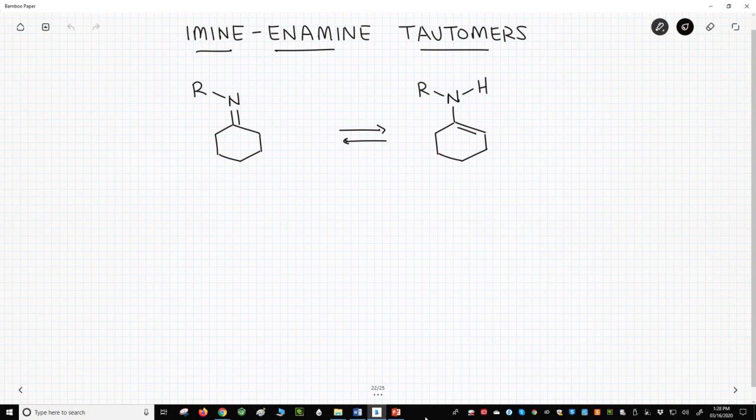On the left, we have the imine form and on the right is the enamine tautomer. These are completely analogous to the keto and enol tautomers of carbonyls. It will likely not surprise you that the imine and enamine forms are in equilibrium with each other.